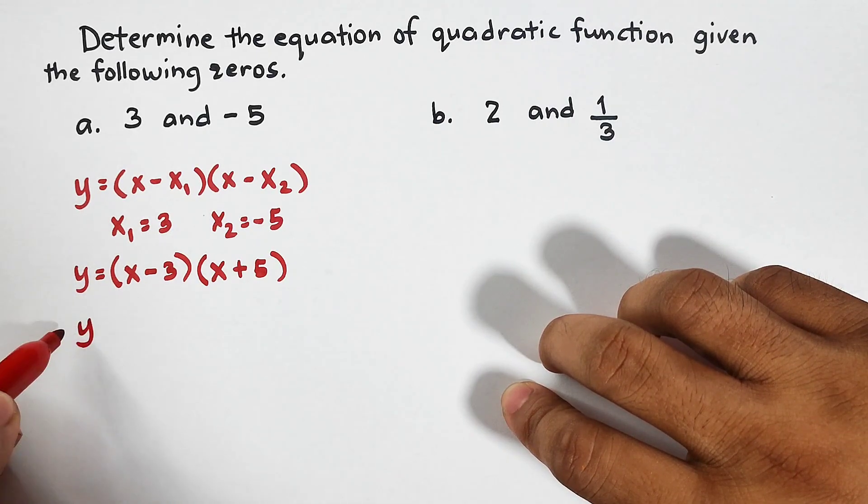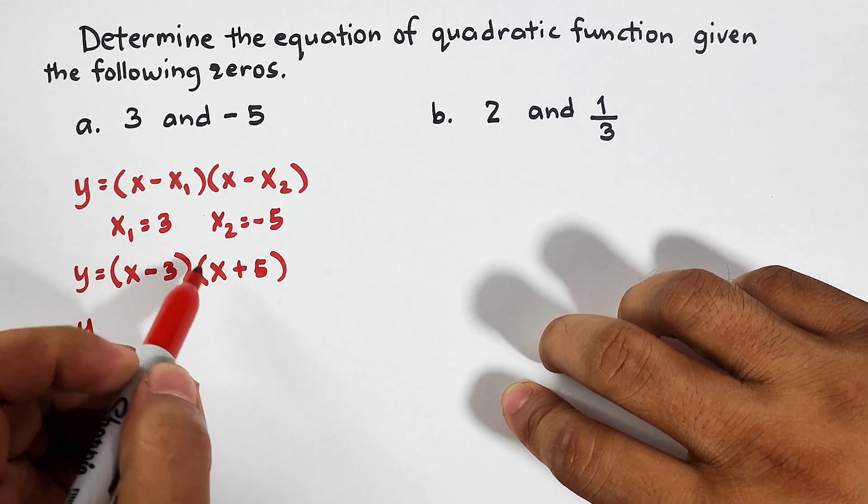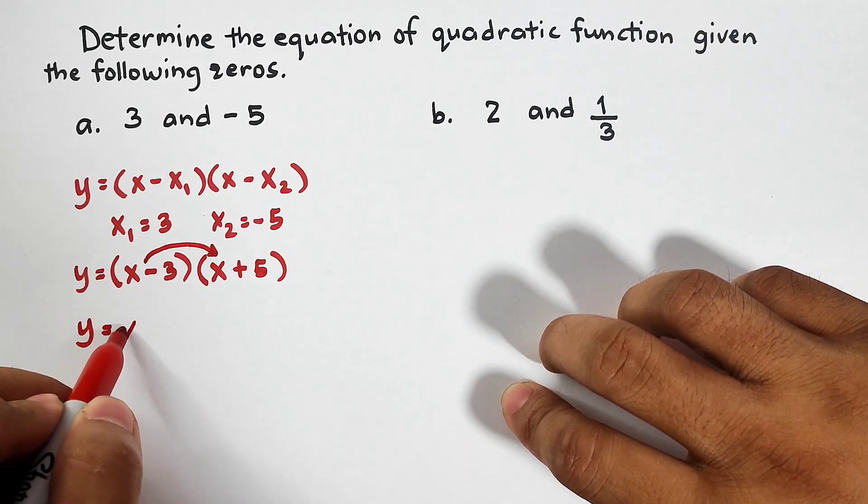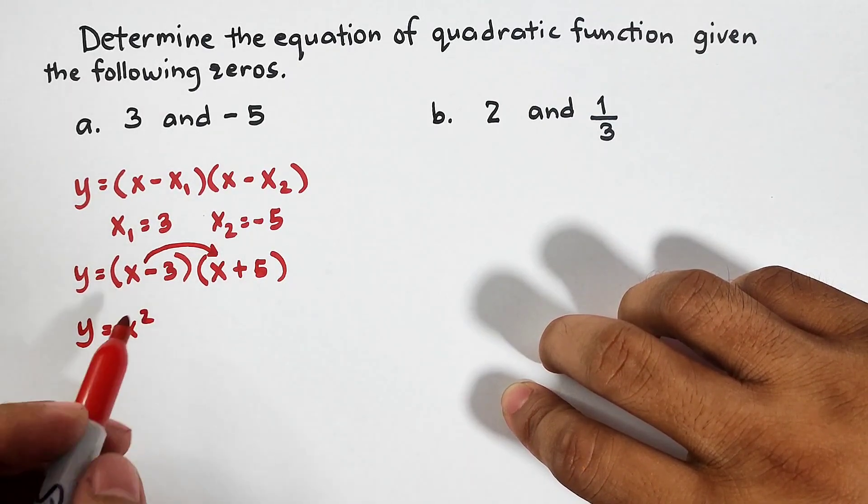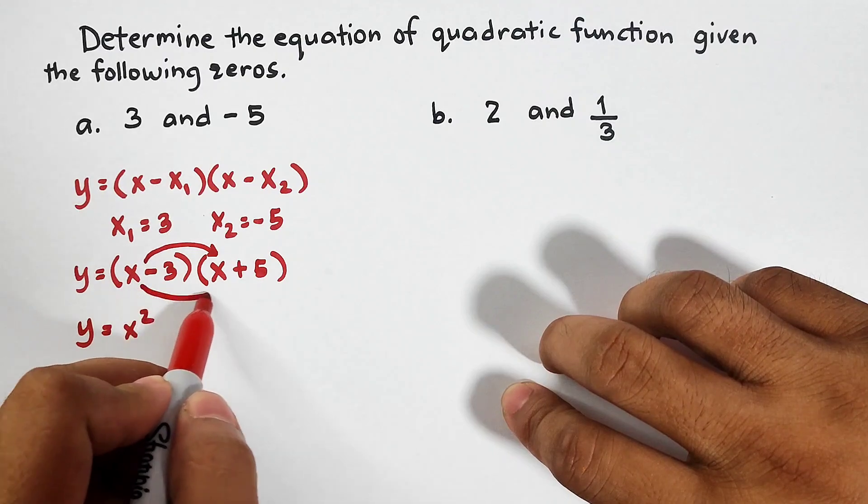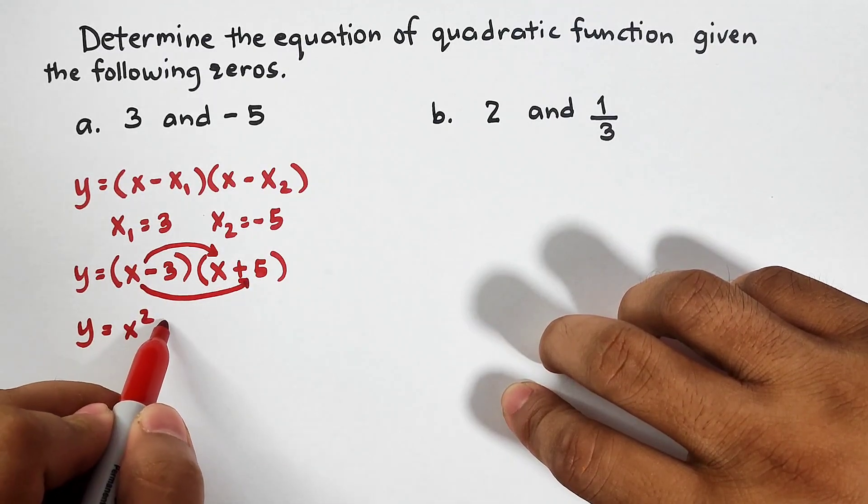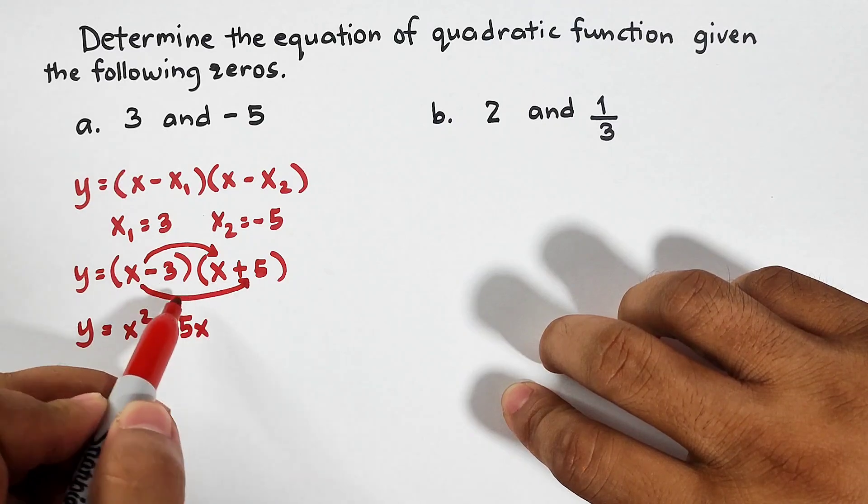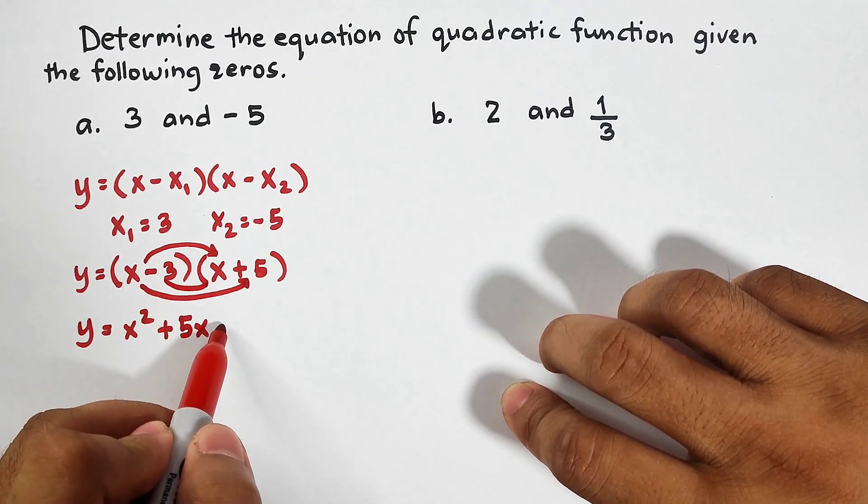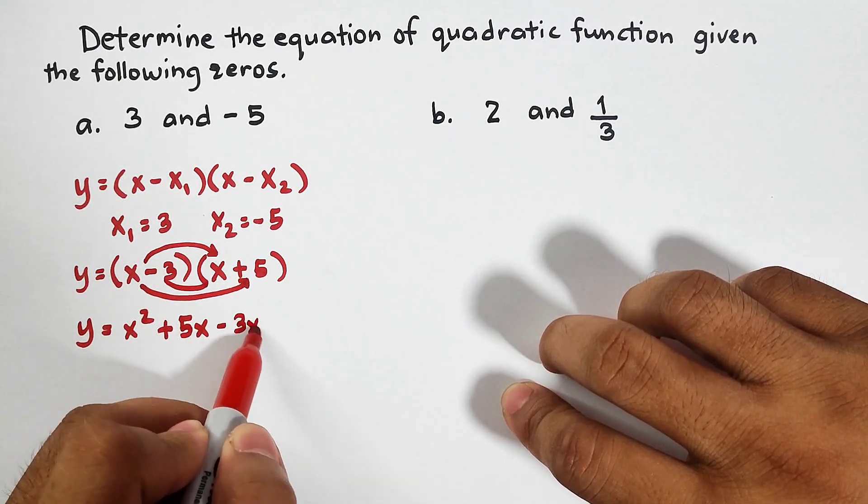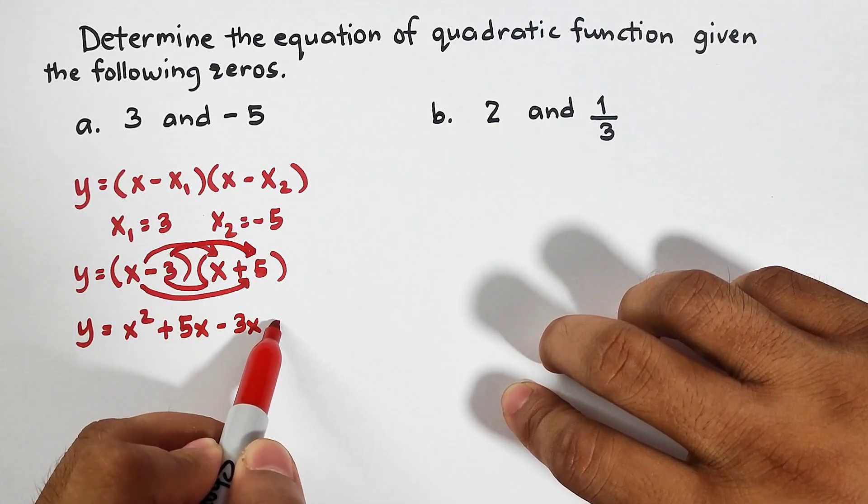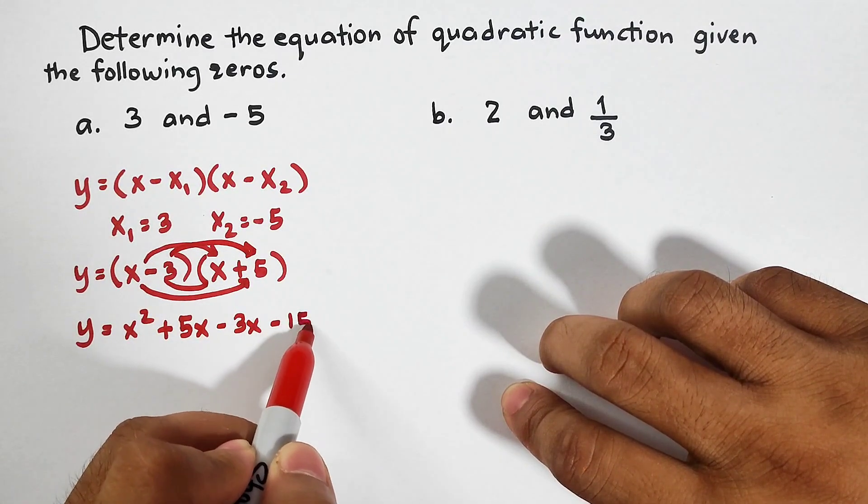So, let's multiply the terms. x times x, that is equal to x square. This x and 5, that would be plus 5x. Next, negative 3 and x, multiply them, it would be negative 3x. Next is negative 3 and 5, that would be negative 15.